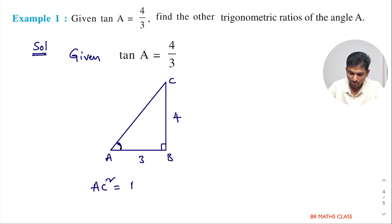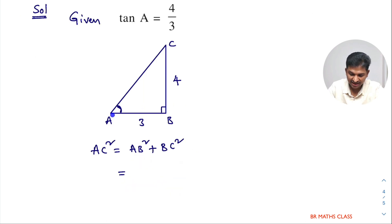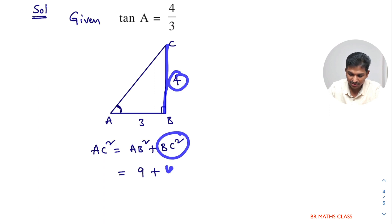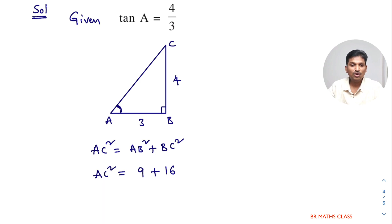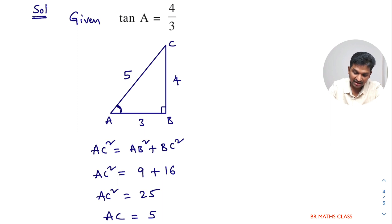By using Pythagoras theorem: AC square equals AB square plus BC square. AC is the hypotenuse. Substituting: AB is 3, so AB square is 9; BC is 4, so BC square is 16. Therefore AC square equals 9 plus 16 equals 25. So AC equals plus or minus 5, but since length can never be negative, AC is 5. We now have all three sides of the triangle.